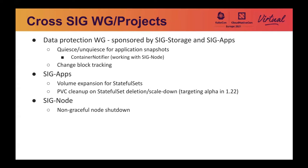Finally, together with SIG Node, we are trying to recover volumes from shutdown nodes better. Currently, when a node becomes unavailable for whatever reason, Kubernetes will not detach volumes from that node because the node could still be running — it may just not be able to talk to the API server. Detaching such volumes would corrupt them because they are still mounted on the node. But if we know that the node is shut down, then the volumes are definitely not mounted. We can detach the volumes and attach them somewhere else, so the pods that use the volume can be rescheduled to other nodes and your application can resume much quicker than today.